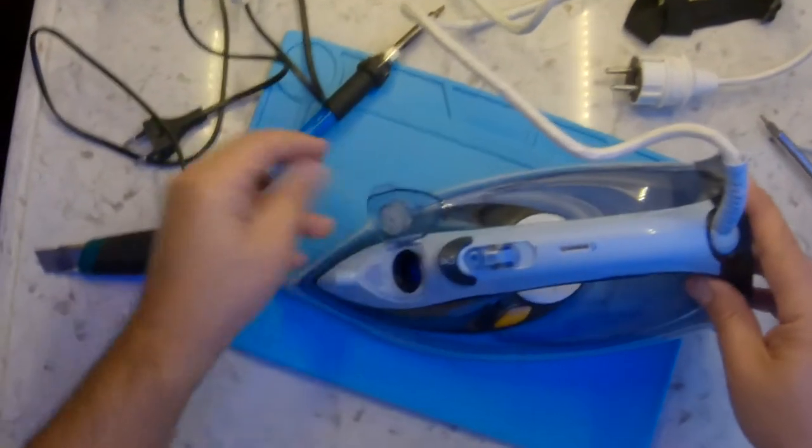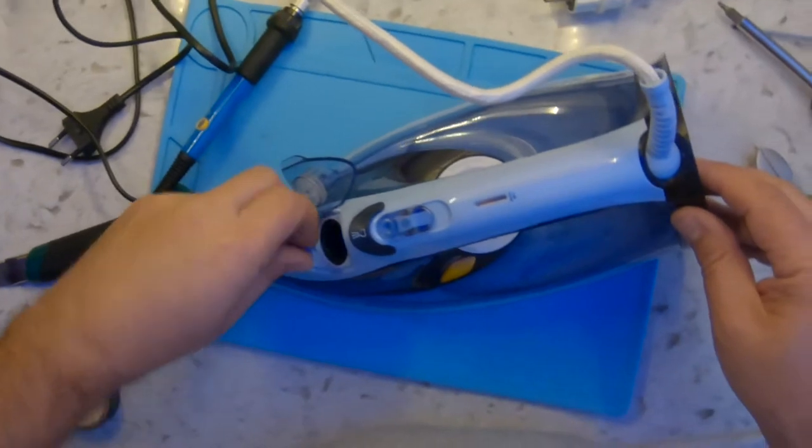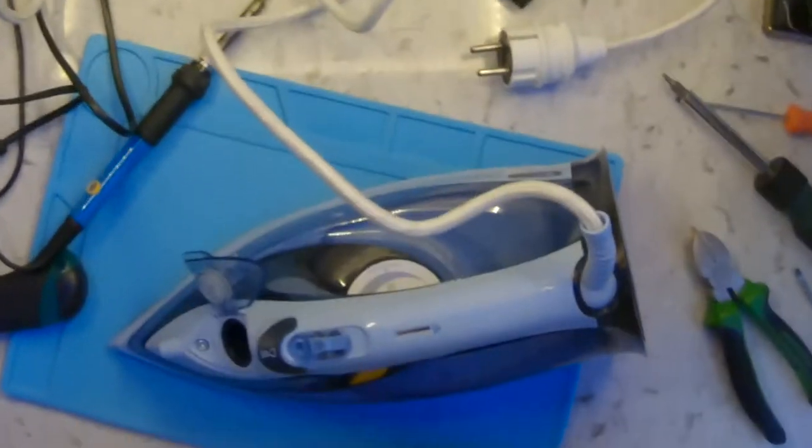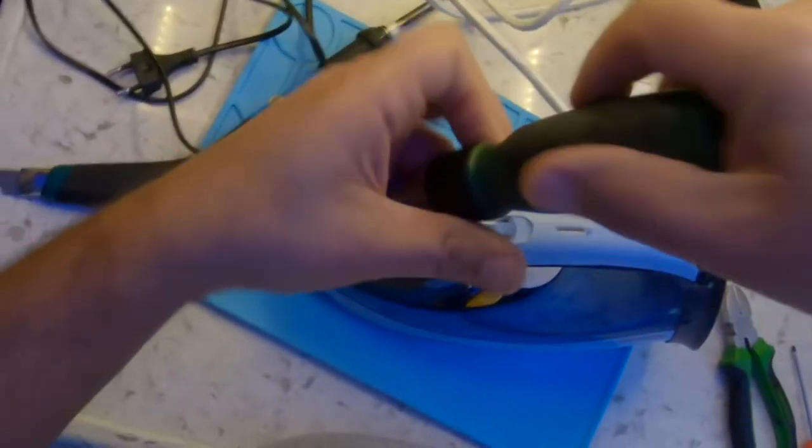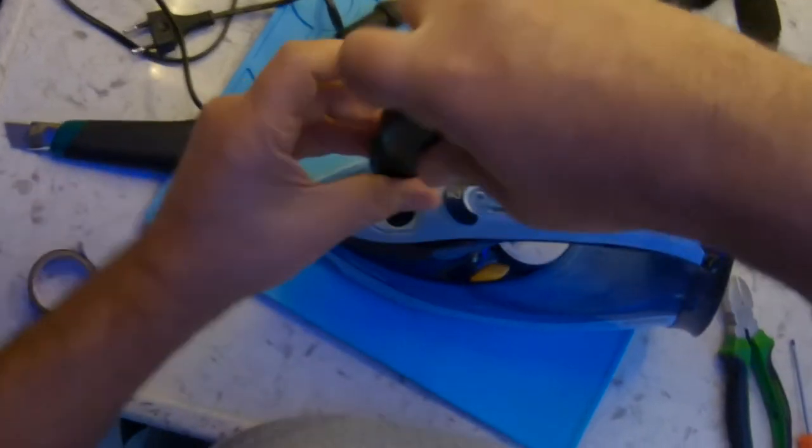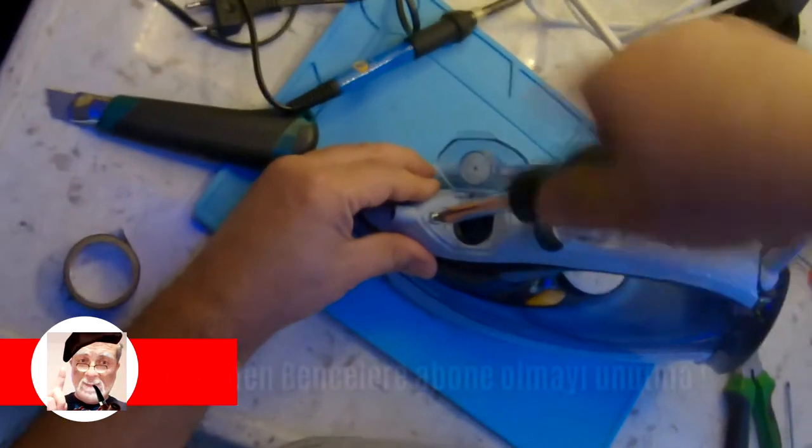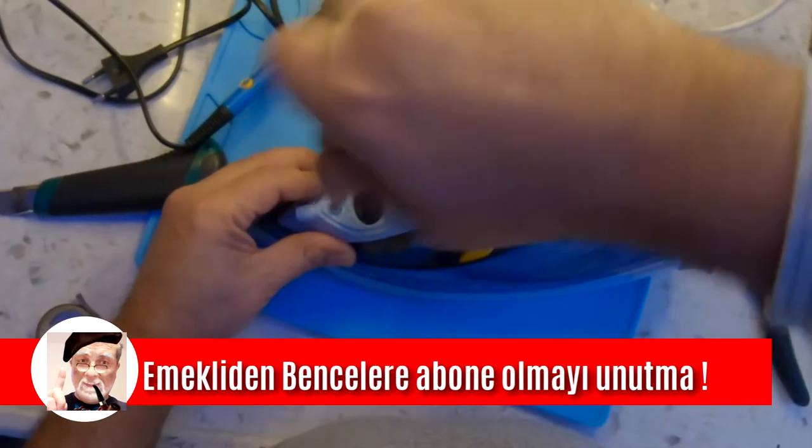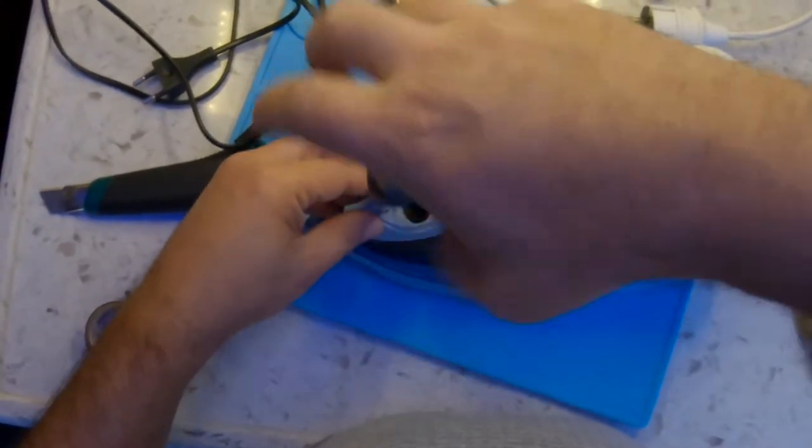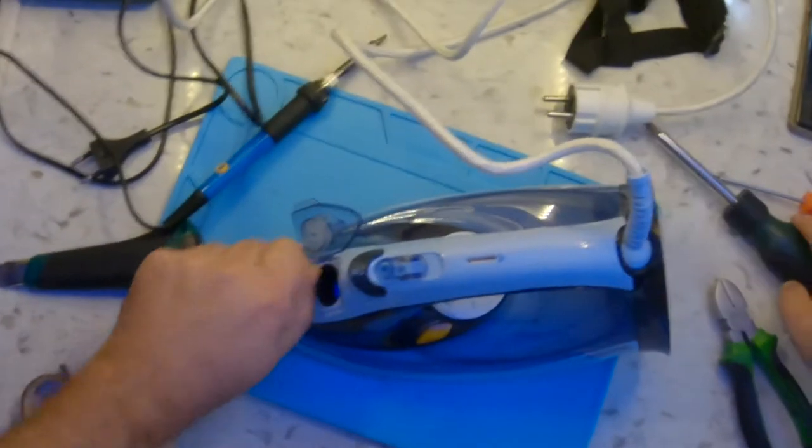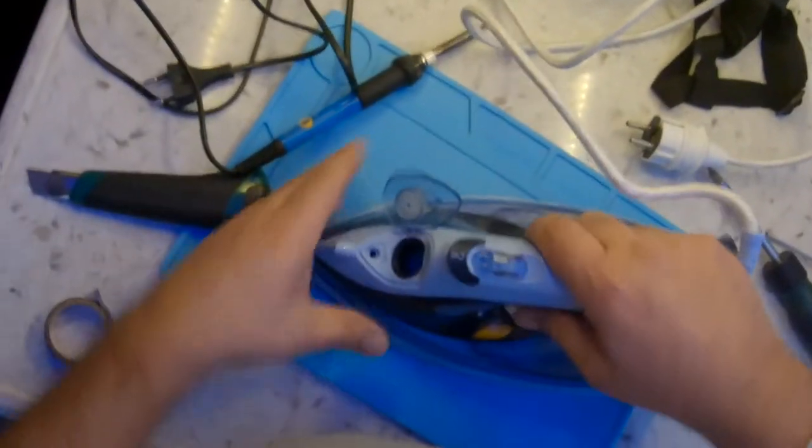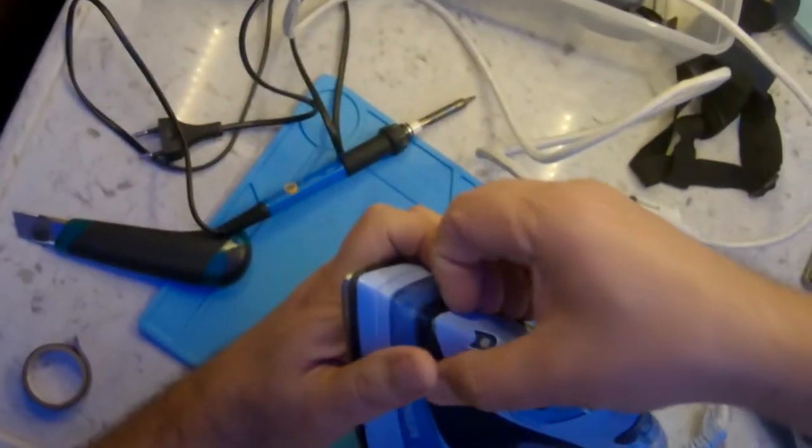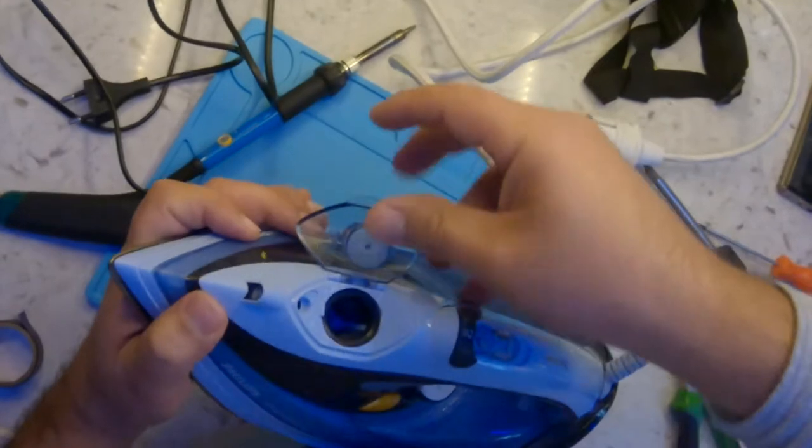First you need to remove this blue handle. Remove this little lid with your nail. And then remove this hex screw from there. And then carefully you need to remove this light blue handle plastic covering the handle, as in the video.